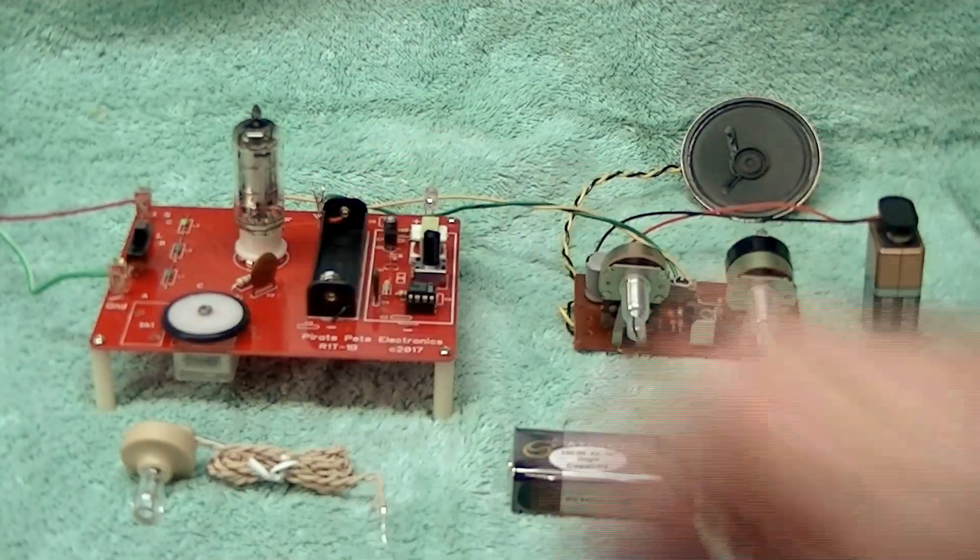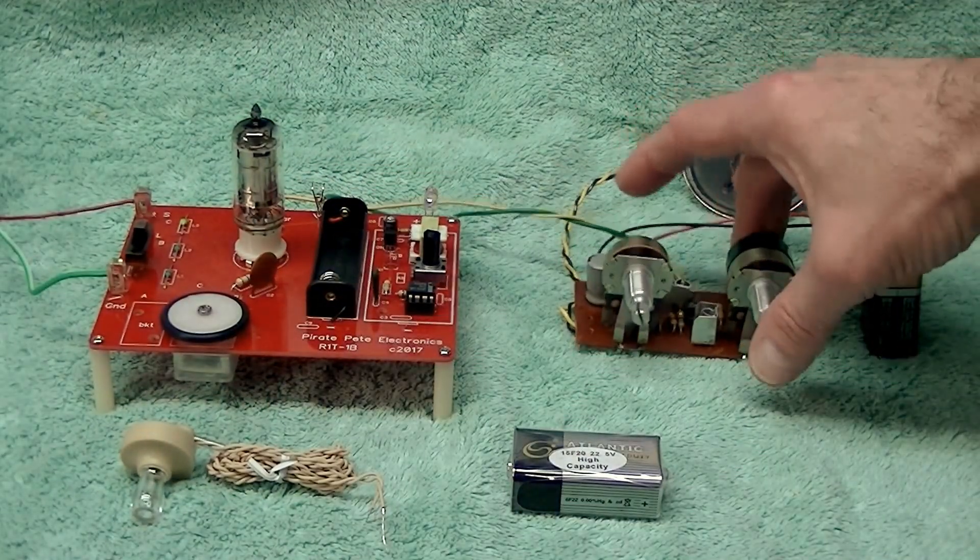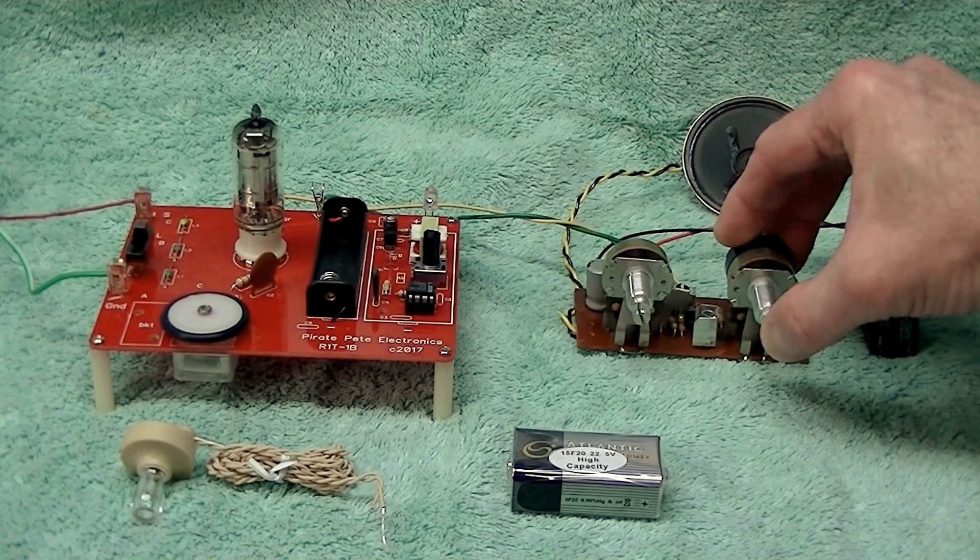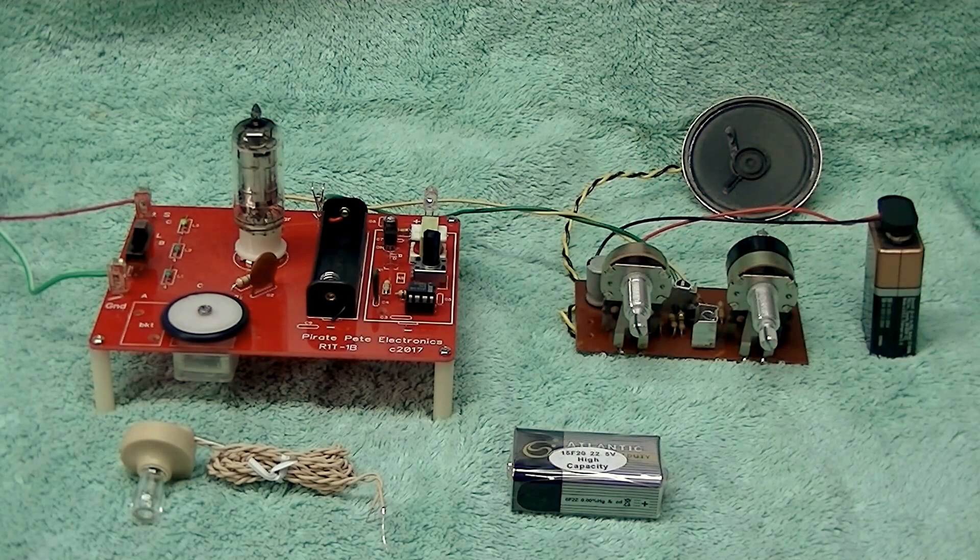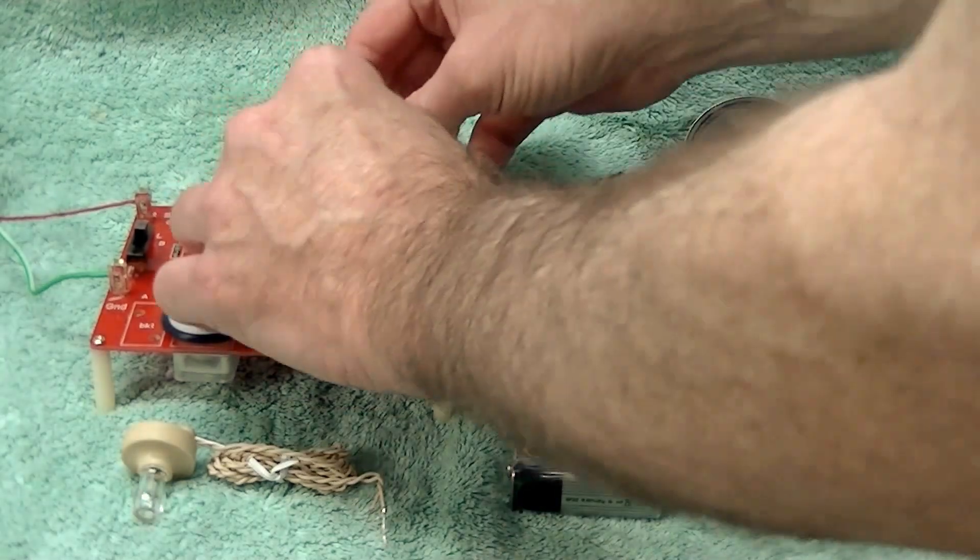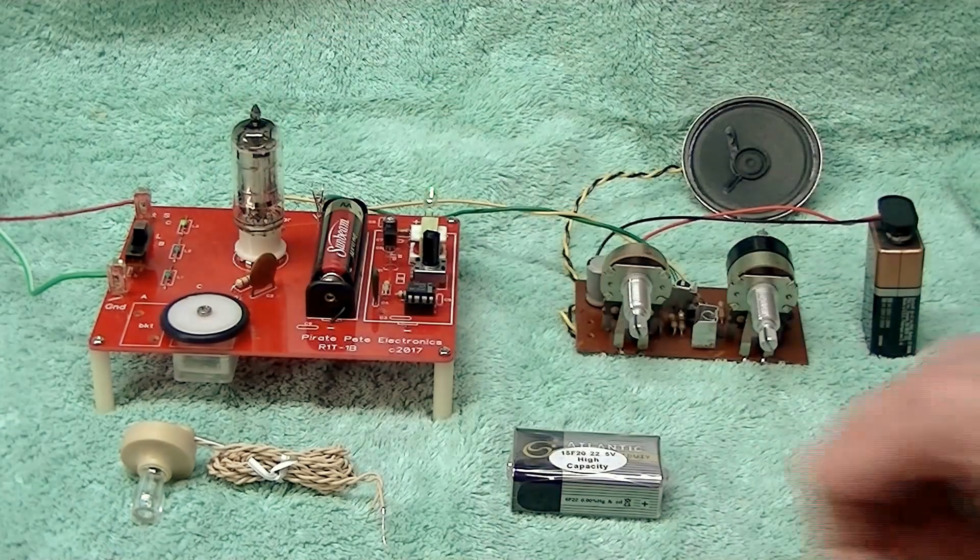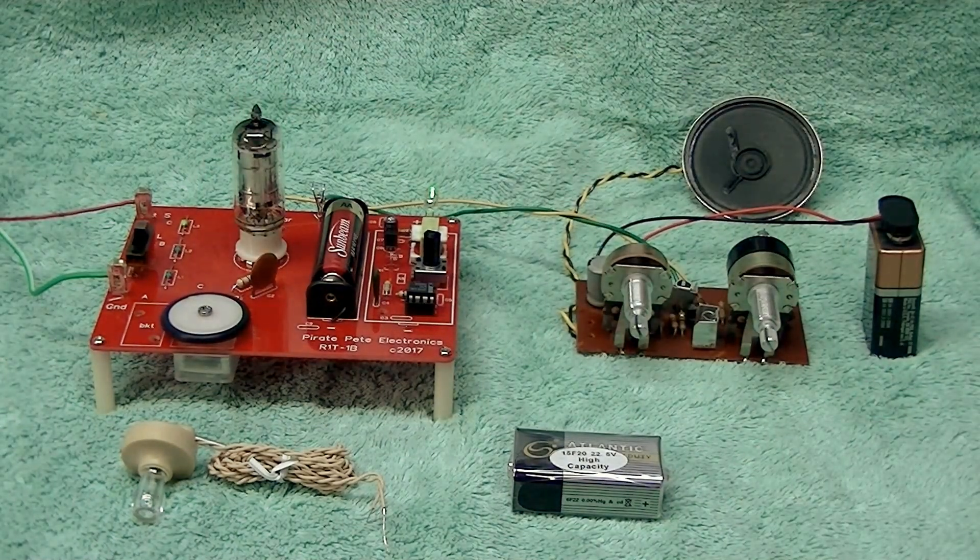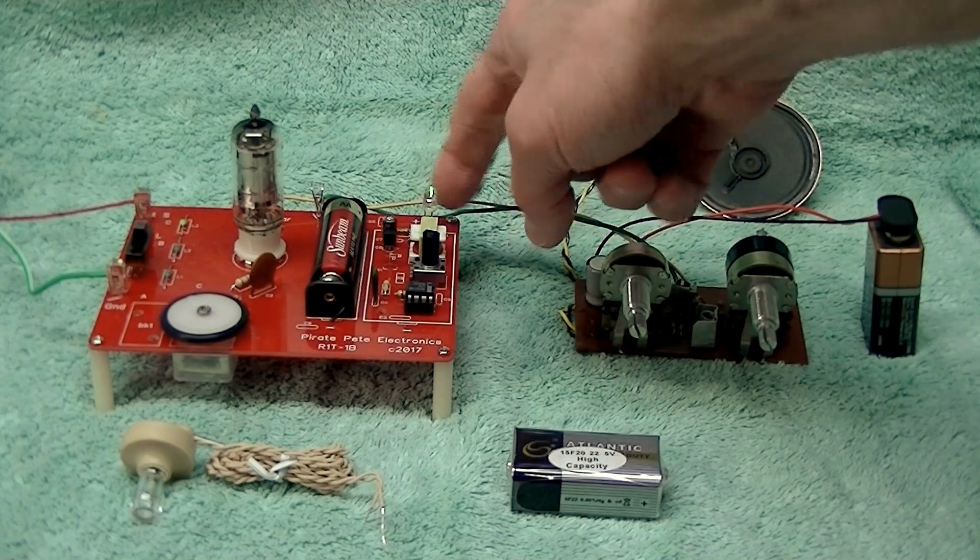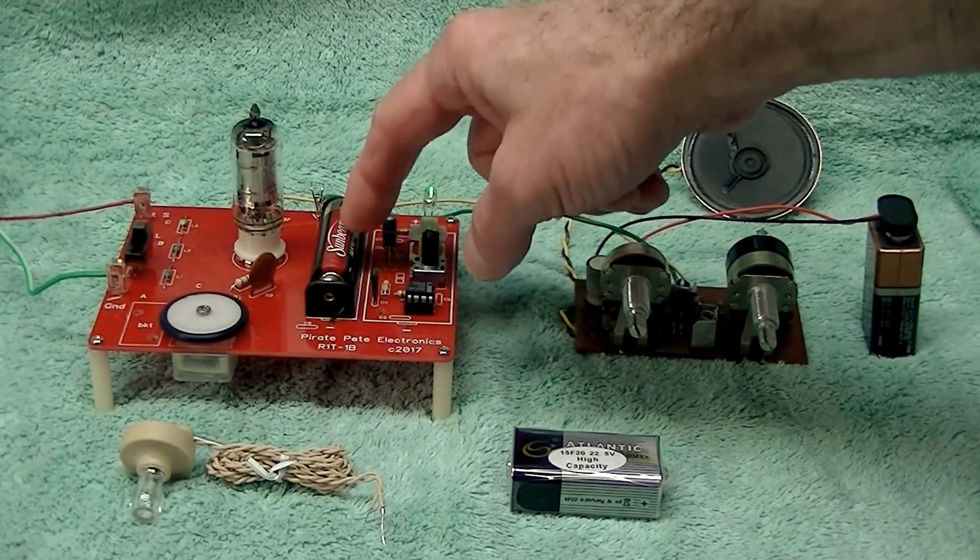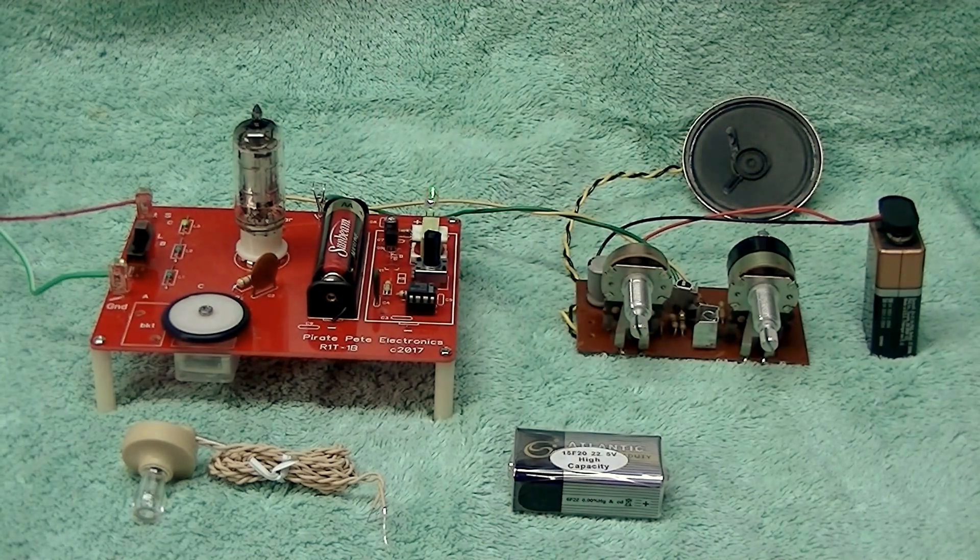So I'm going to place a battery in the circuit. And although you can't see it on the camcorder, there is an LED here that lights up indicating you have B plus voltage. And I guess the camera is picking up the volume from the station.